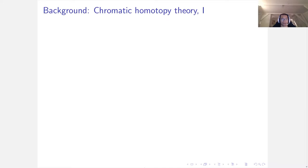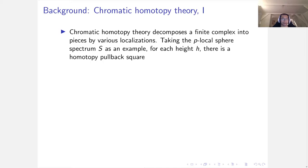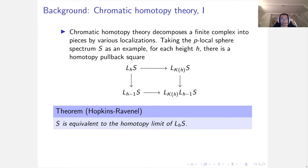Let's start with some background. Chromatic homotopy theory decomposes a finite complex into pieces by various localizations. Taking the p-local sphere spectrum as an example, for each height h, there is a homotopy pullback square. A theorem of Hopkins-Ravenel says you can recover the sphere spectrum by taking the homotopy limit of the left vertical map.